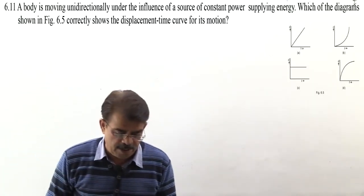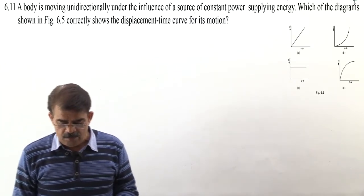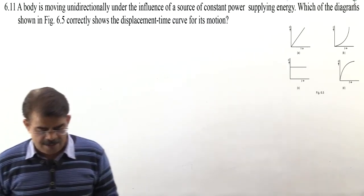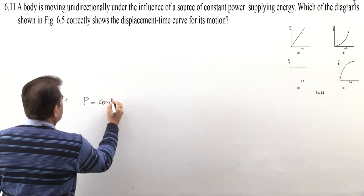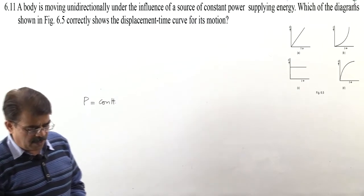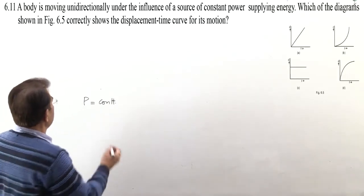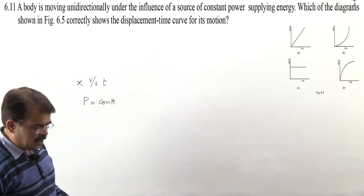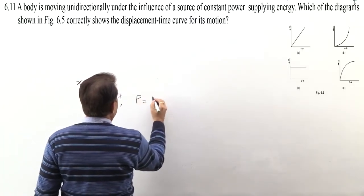Next question is 6.11. A body is moving unidirectionally under the influence of a source of constant power supplying energy. Means power is constant, this is given. We need to find which diagram correctly shows the displacement-time curve for its motion. So between displacement and time, we need the relationship.